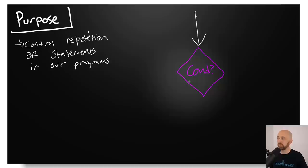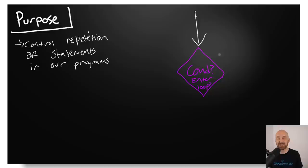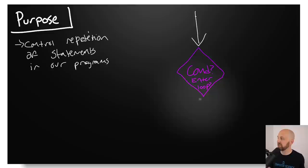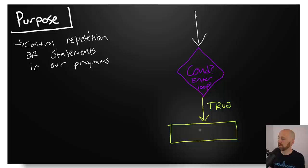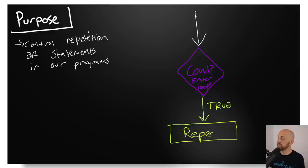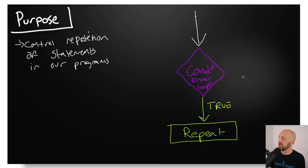The condition has to be either true or false. If that condition is true, control is going to go into the repeat block. The repeat block is a lot like the then block of an if-then statement, but in a loop we call it the repeat block because it has very different semantics than the then block. If that condition is false, we're going to skip right past that repeat block and continue on in our program.